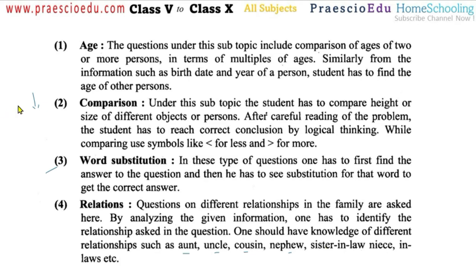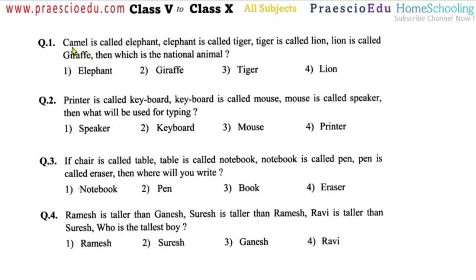We will see all four types through some examples, because the only way to understand this topic is to solve more and more problems and understand more and more examples. Question number one: camel is called elephant, elephant is called tiger, tiger is called lion, lion is called giraffe — then which is the national animal?